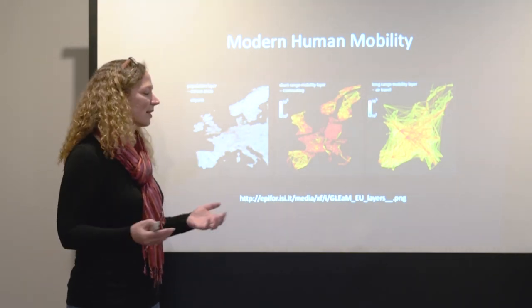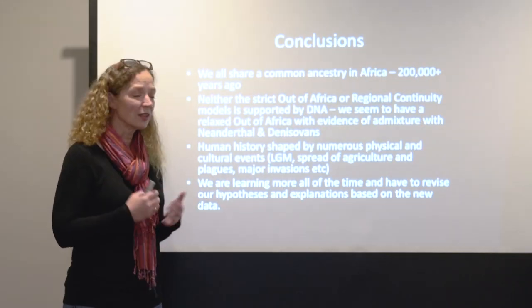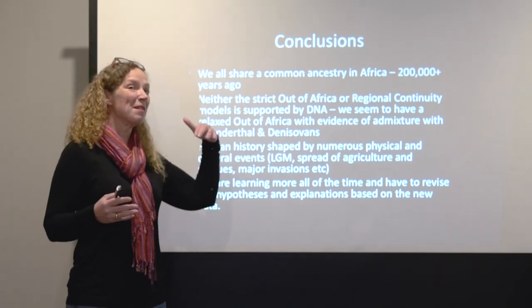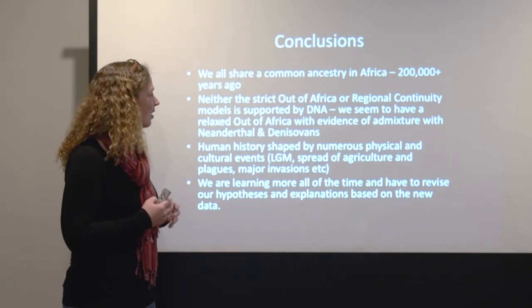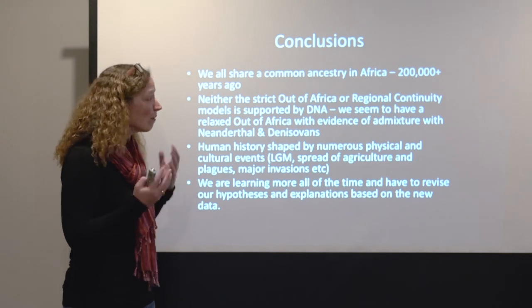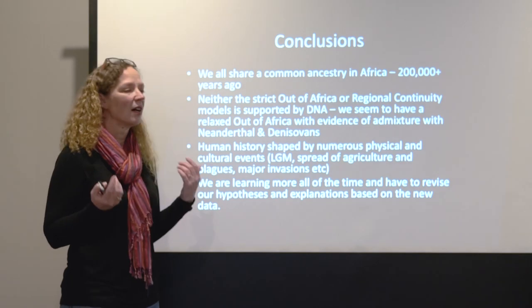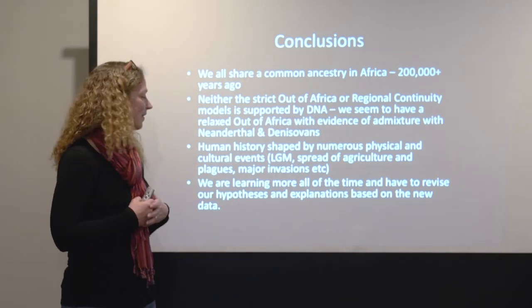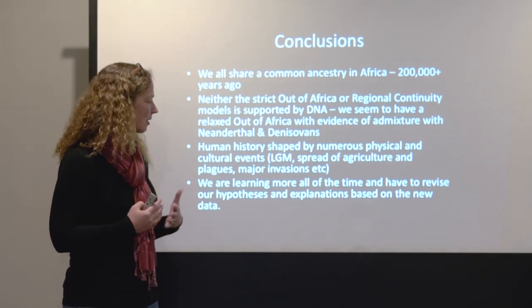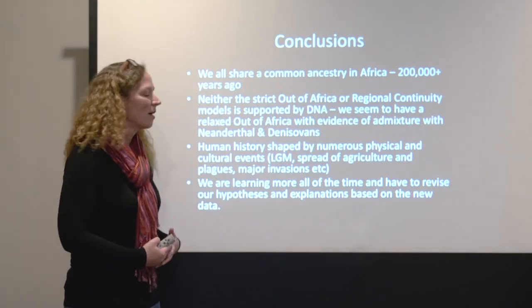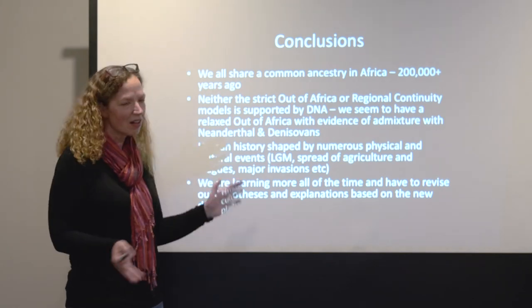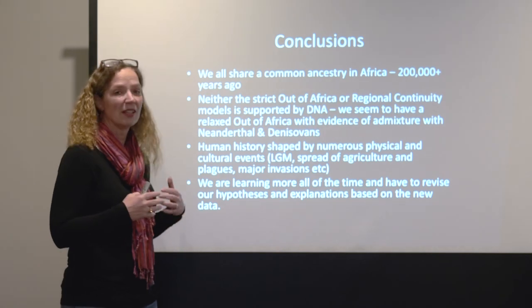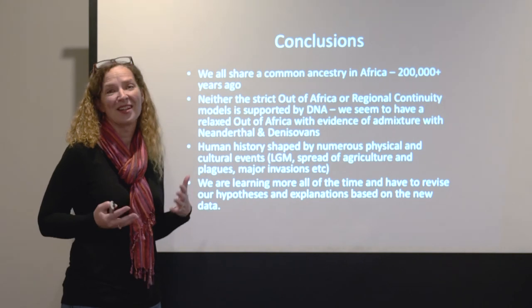To conclude: we all share a recent common ancestor in Africa, dated to between 150,000 and 200,000 years ago — possibly a bit more given some new fossil evidence. It's neither a strict out-of-Africa nor a regional continuity model, but what we seem to have is a soft, relaxed out-of-Africa model with evidence of mixture with Neanderthals and with Denisovans. Human history is shaped by numerous physical and cultural events — the Last Glacial Maximum, the spread of agriculture, historic plagues, major military invasions — all affecting the genetic makeup of different populations. We really do have to be flexible and revise our hypotheses, and that is the nature of the scientific method.